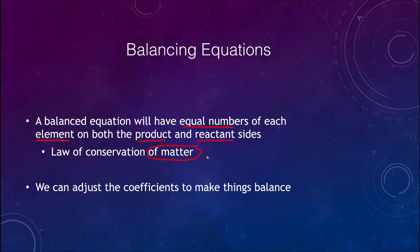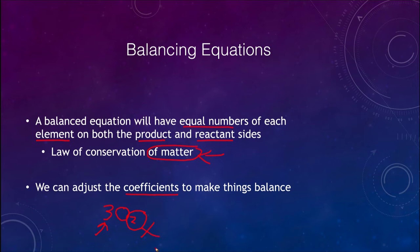This goes back to the law of conservation of matter: matter cannot be created or destroyed in chemical reactions. The things we can adjust are the coefficients. When we have oxygen molecules, O2, we can say how many of those we have — for example, three of them. The coefficient out front can be adjusted. You cannot adjust the subscript, because if you change that you're changing the molecule. Even though it may seem easy to balance by changing the subscript, that is not acceptable. You can only adjust the coefficients.